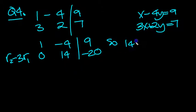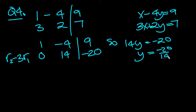We've got 14y equals minus 20. So y equals minus 20 over 14. So y will equal minus 10 over 7.